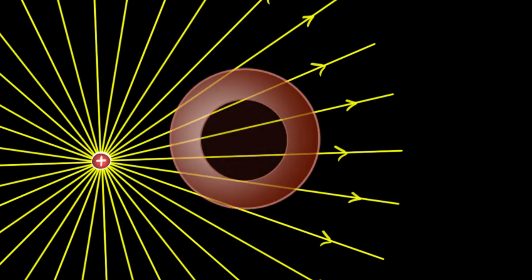Say we have a positive charge kept somewhere in space and close to it we're gonna keep a spherical conductor. Imagine a metallic sphere with a hole inside of it, the cavity inside.